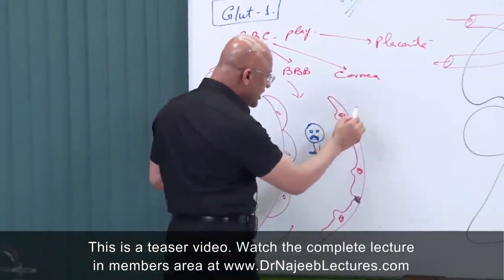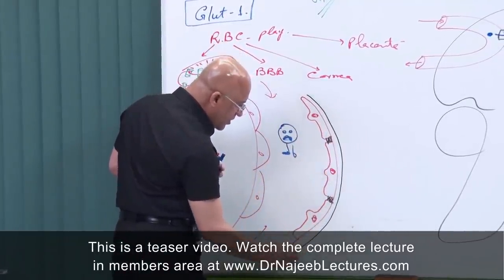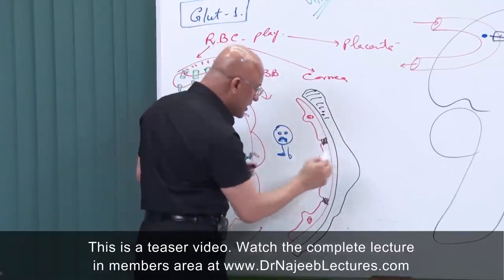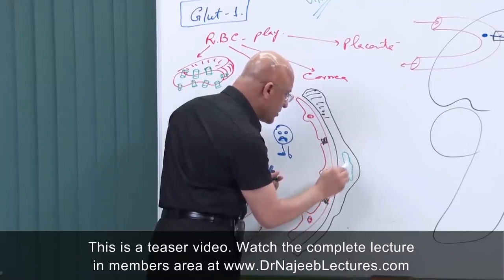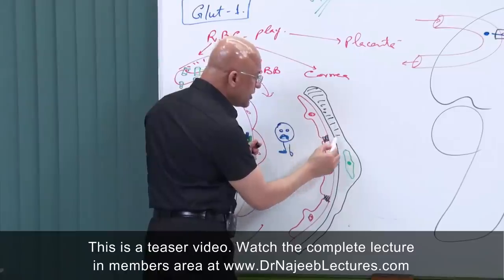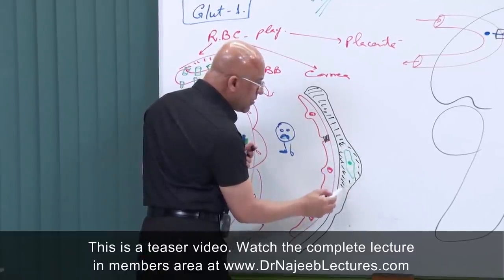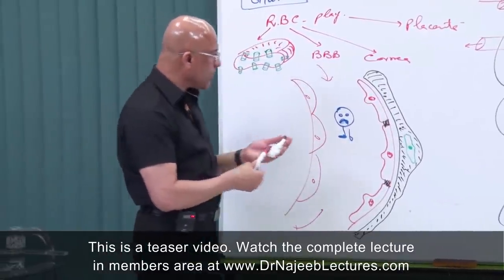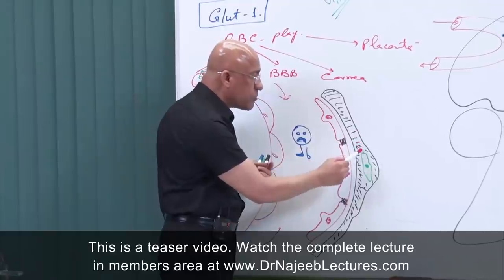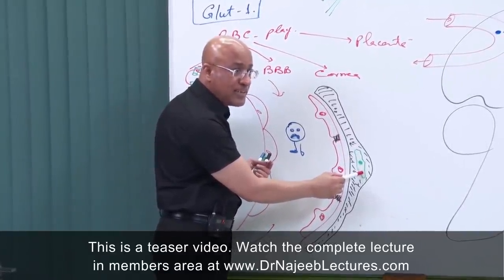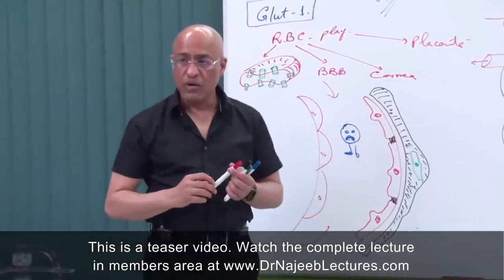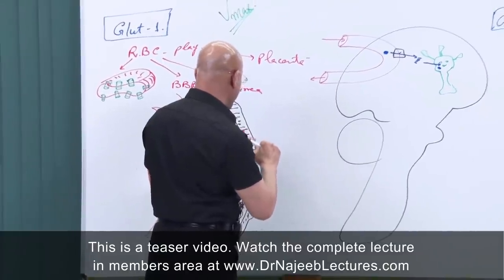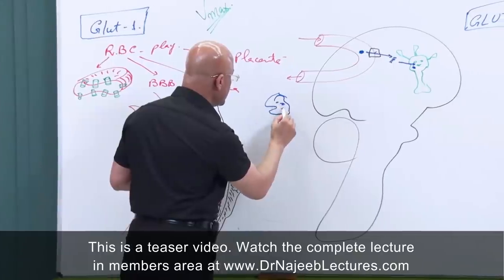Under the endothelial cells, if a substance passes through, it encounters the basement membrane. Within the basement membrane there are special cells called pericytes. So any substance leaving the blood of cerebral capillaries to reach the extracellular fluid must pass through the endothelial lining, then the basement membrane with pericytes, and then one more layer — the astrocytes.